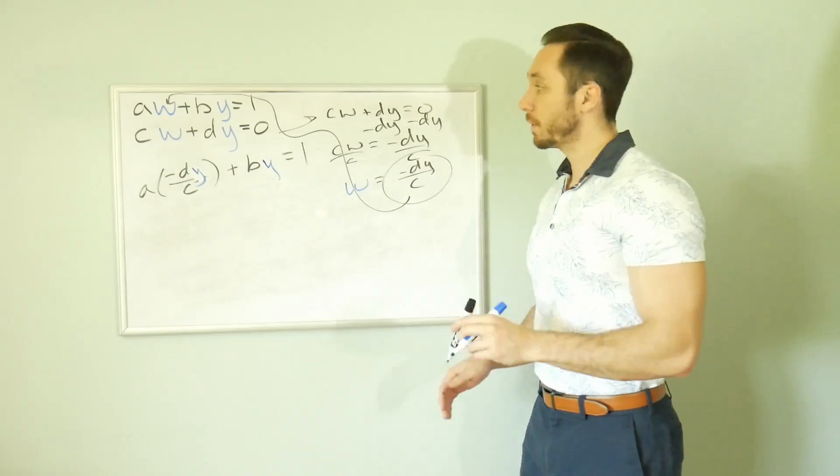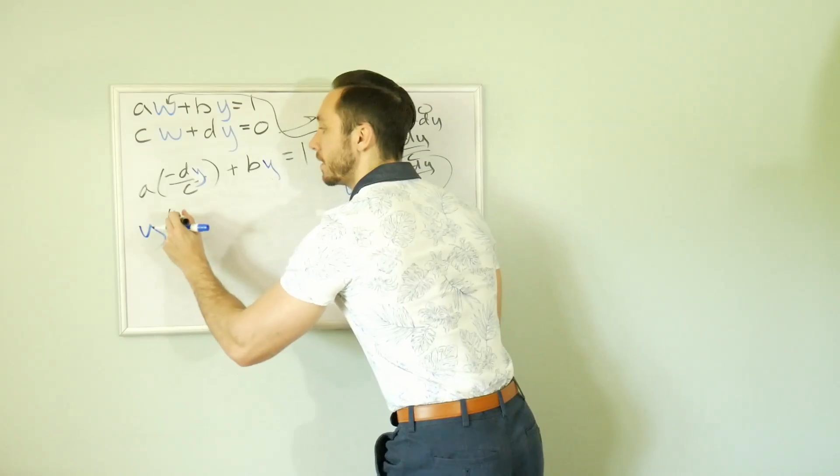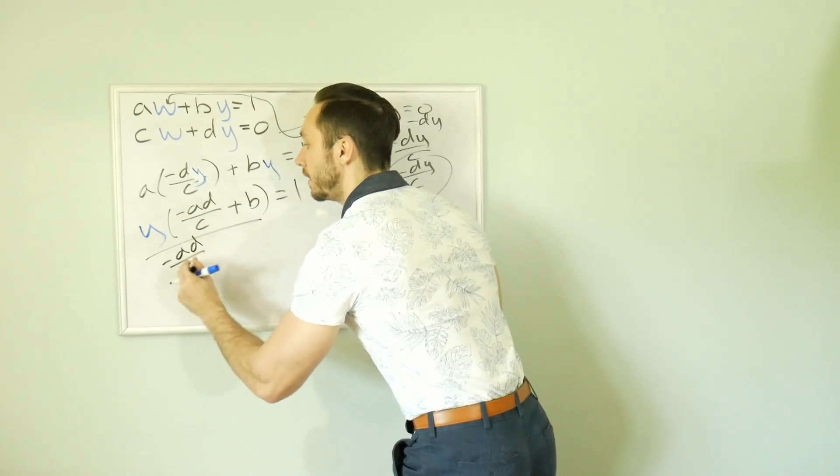We're going to use parentheses. Negative DY over C. And we're going to add that to BY equal to 1. We have only one variable from the inverse matrix. And that's Y this time around. So let's solve for Y. We'll factor it out first. We're going to divide both sides. Y times negative AD over C plus B. That's equal to 1.